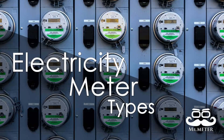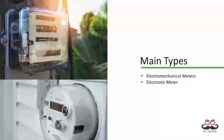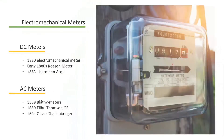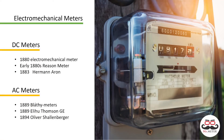Hello everyone, this is Mr. Meter and we are back with a brief explanation of various types of electricity meters. The images used in the slides are simply from Google search and we are not promoting any brand in this video. Electricity meters installed in our homes, factories, industrial areas, substations, and so on are simply measurement devices responsible for measuring consumption plus various grid parameters needed to manage the power grid. There are two main types: electromechanical and electronic meters.